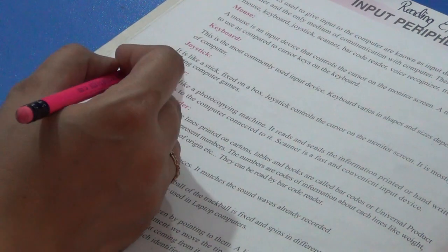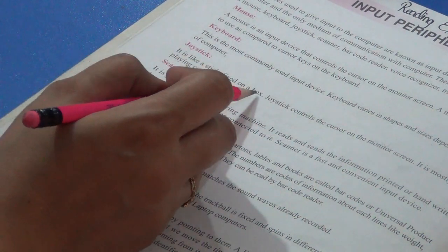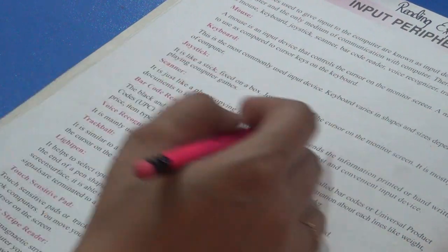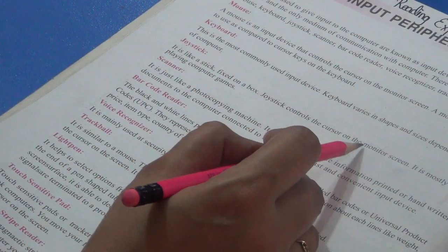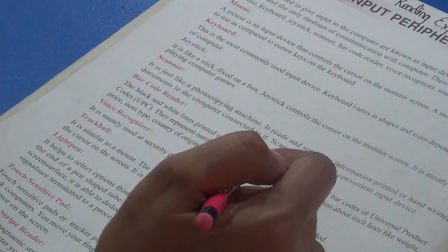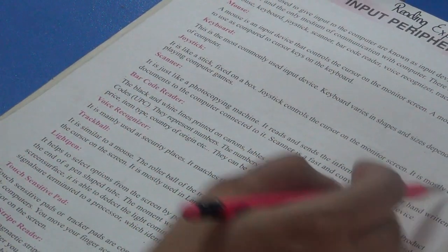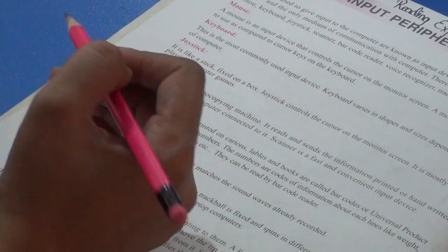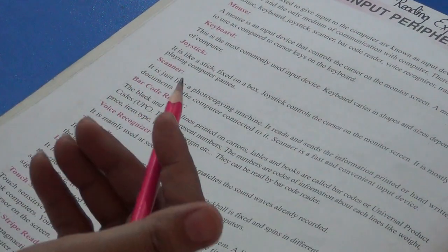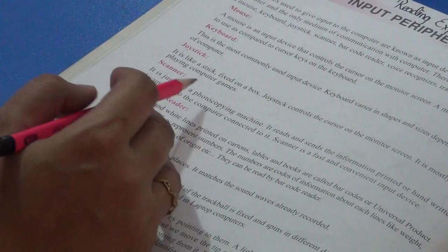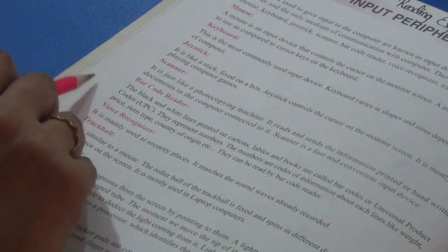Now the third one is joystick. It is like a stick fixed on a box. Joystick controls the cursor on the monitor screen. It is mostly used in playing computer games. Suppose you are playing racing games. Anything that needs to move forward, backward, to and fro, we use joystick.